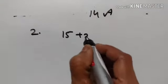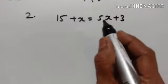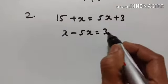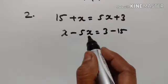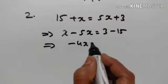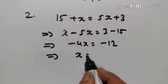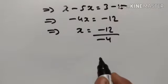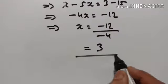15 plus x is equal to 5x plus 3. 5x is transposed to the left. x minus 5x is equal to 3 minus 15. Plus x minus 5x is equal to minus 4x. Minus 4x is equal to 3 minus 15 is equal to minus 12. x is equal to minus 12 divided by minus 4. Minus divided by minus is plus, so 12 divided by 4 is equal to 3. x is equal to 3.